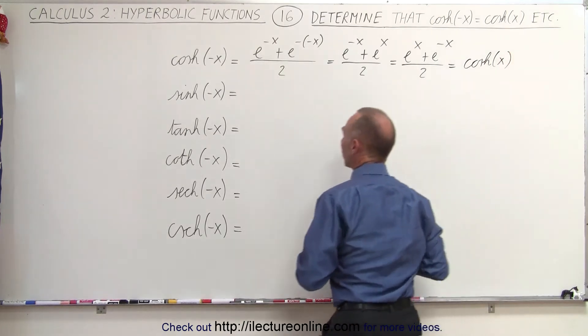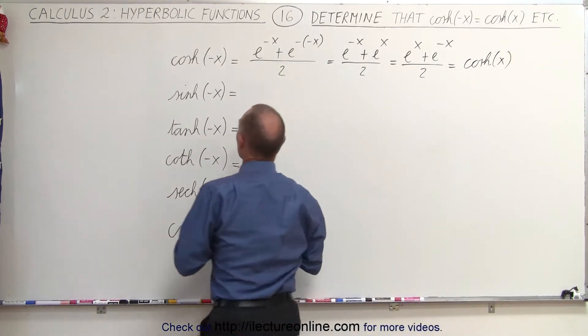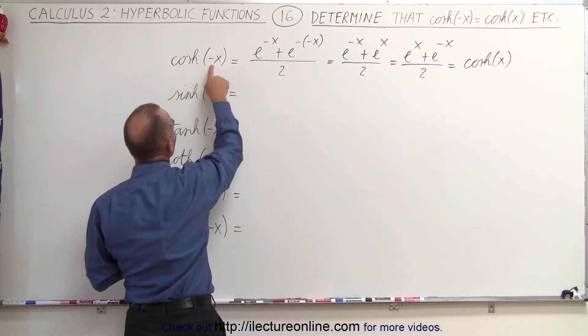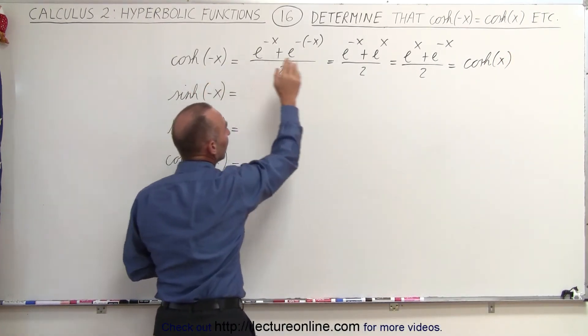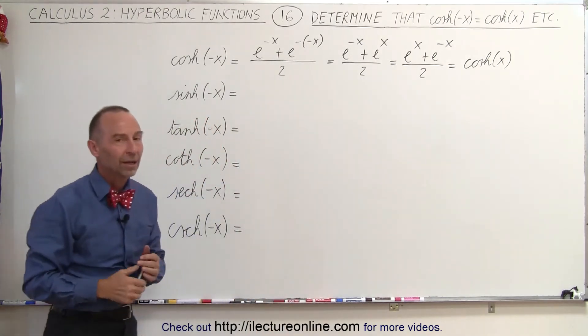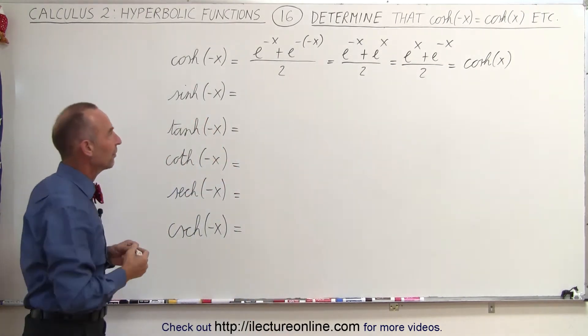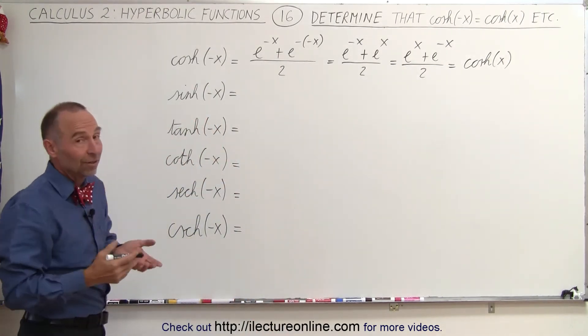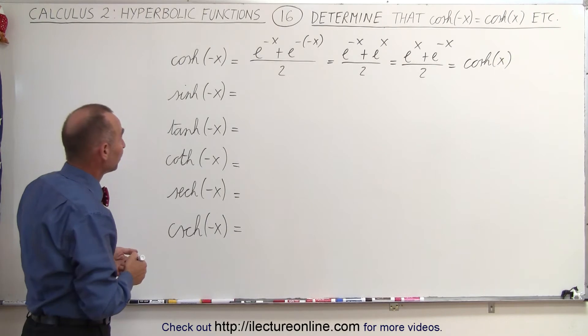So in other words, the hyperbolic cosine of a negative x is equal to the hyperbolic cosine of a positive x, and that's because it's an even function.